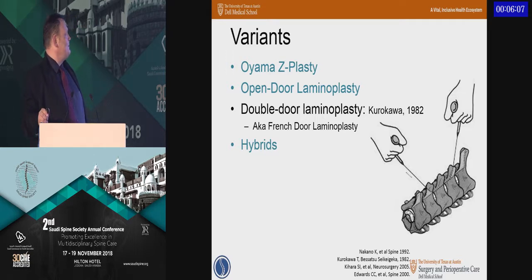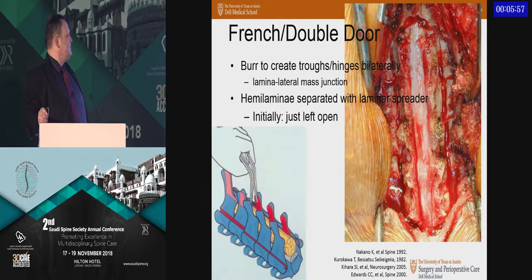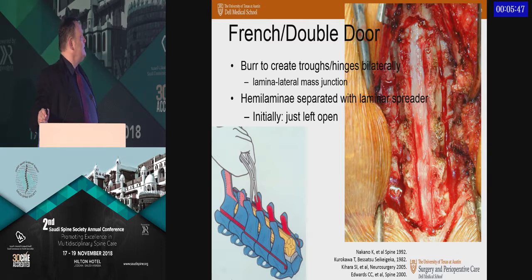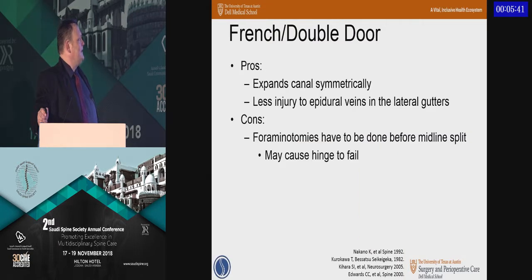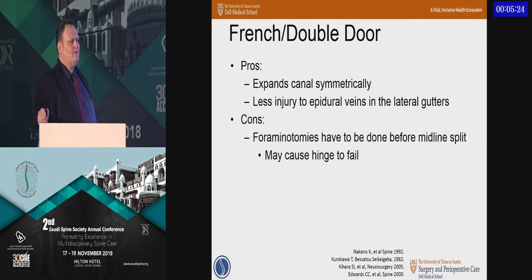Developed around the same time but less popular in the U.S. is the French door laminoplasty, where a Gigli saw or thread wire saw is used to cut through the spinous processes, and hinges are cut at the junction of the lateral mass and lamina, then a lamina spreader pops the spinous processes open. The advantage is symmetrical expansion of the canal while avoiding epidural veins in the lateral gutters. The disadvantage is that foraminotomy is very hard to do — it must be done before the hinges are opened, and excessive foraminotomy may cause hinge failure.